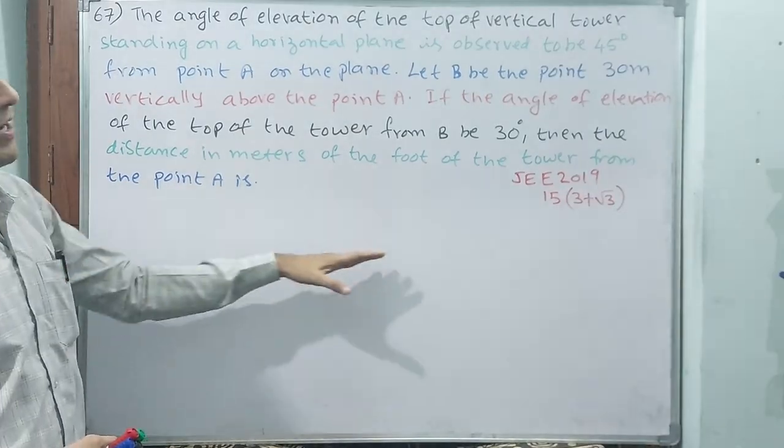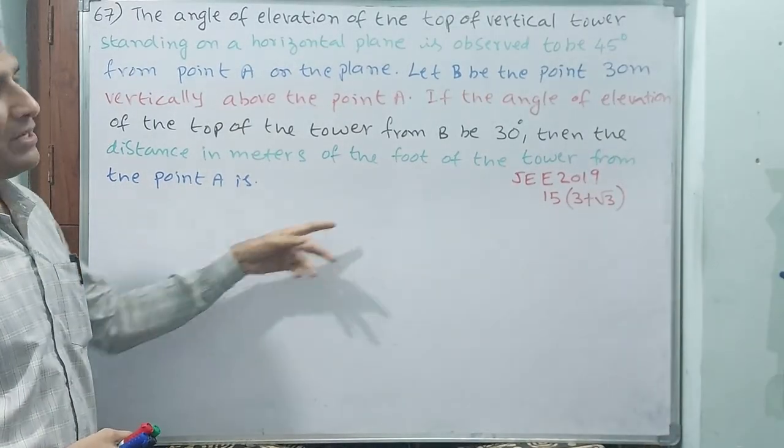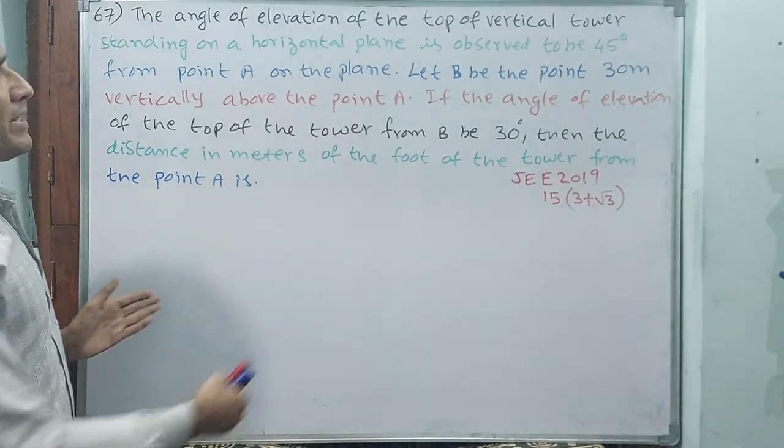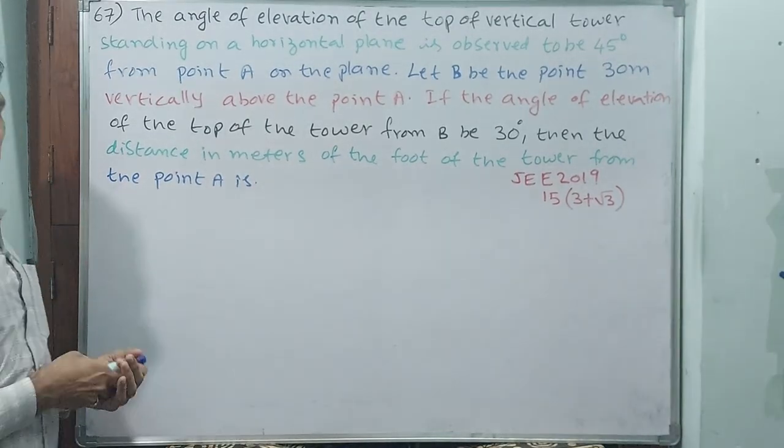See, from bottom A, 45 degrees; from top B, 30 degrees. Then the distance in meters of the foot of the tower from point A is what we need to find. First, let me draw this figure.